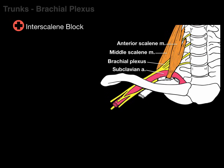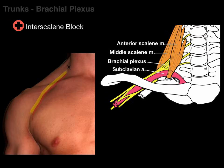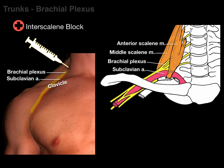There's something called an interscalene block. Looking at this surface anatomy, there's our clavicle. In the supraclavicular region there is our subclavian artery and there's our brachial plexus, and X marks the spot where you would put this block between our scalenes to anesthetize the brachial plexus. This is really good for shoulder, arm, and elbow — not as much for forearm and hand, because the inferior roots and trunks are below that.